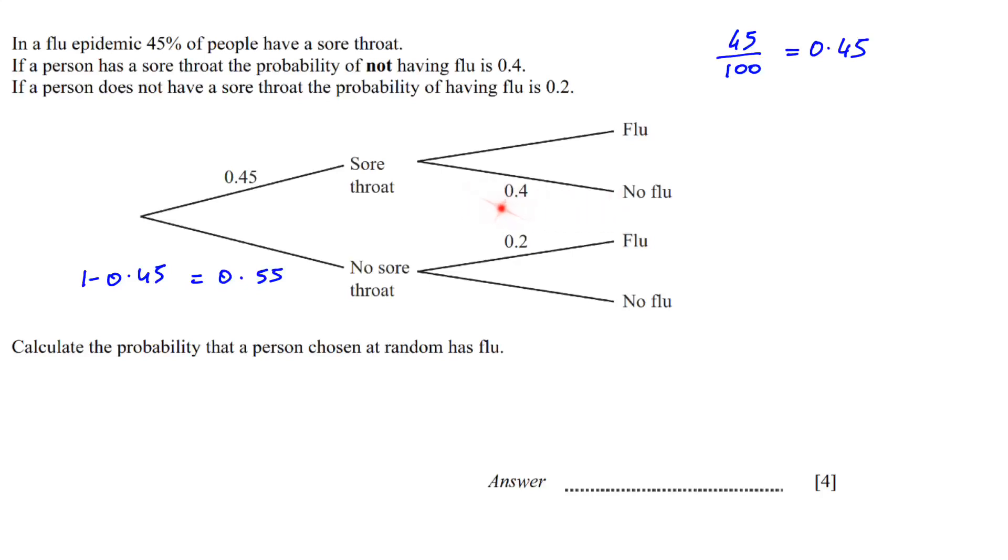In this branch, no flu is 0.4, so flu will be 1 minus 0.4 which is 0.6. In the next branch, flu is 0.2, so no flu will be 1 minus 0.2 which is 0.8.